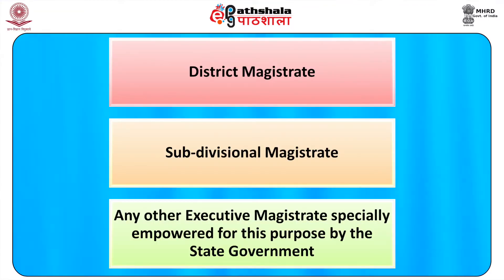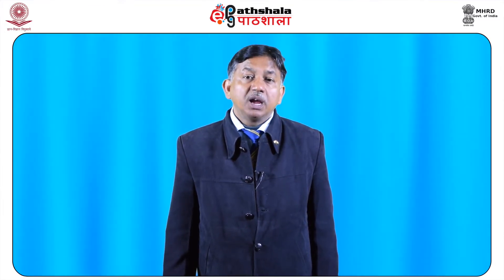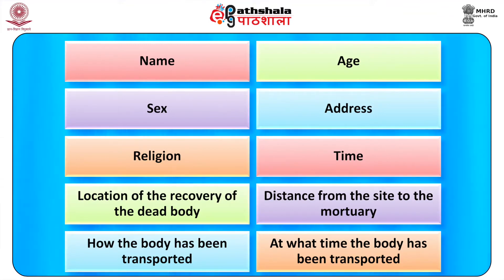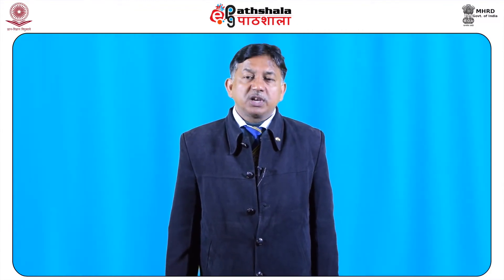Consent from the deceased's relatives is absolutely not required for conducting a medical-legal autopsy. The following magistrates are empowered to hold an inquest: district magistrate, subdivision magistrate, or any other executive magistrate especially empowered for this purpose by the state government. Whenever a body is sent for autopsy, it must always be accompanied by an inquest paper and a dead body challan. A dead body challan is the formal requisition submitted to the doctor by the investigating police officer. It contains the name, age, sex, address, religion, etc. of the deceased, as well as information regarding time and location of recovery of the dead body, distance from the site to the mortuary, how and when the body was transported, name and address of the IO and relatives, and the time of receipt of the dead body.